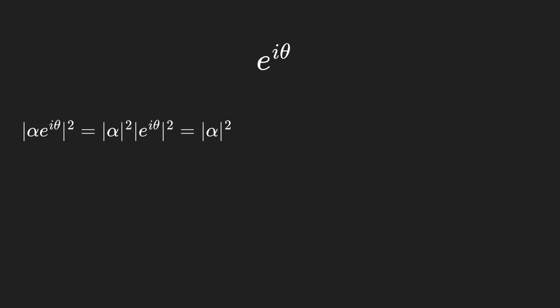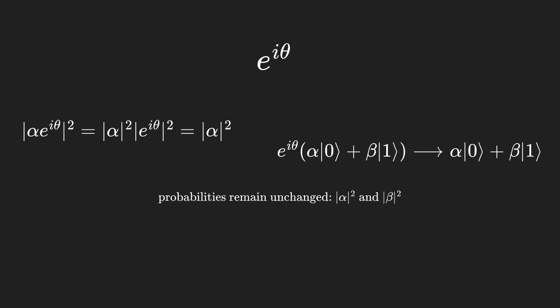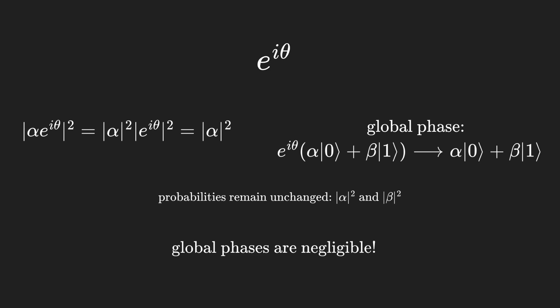Let's get back to complex exponentials. From the properties of the modulo-square operation, any state coefficient multiplied by a complex exponential still results in the same probability. In this sense, a complex exponential that is a common factor of all coefficients has basically no effect. These are known as global phases, and for any calculations they can be neglected.